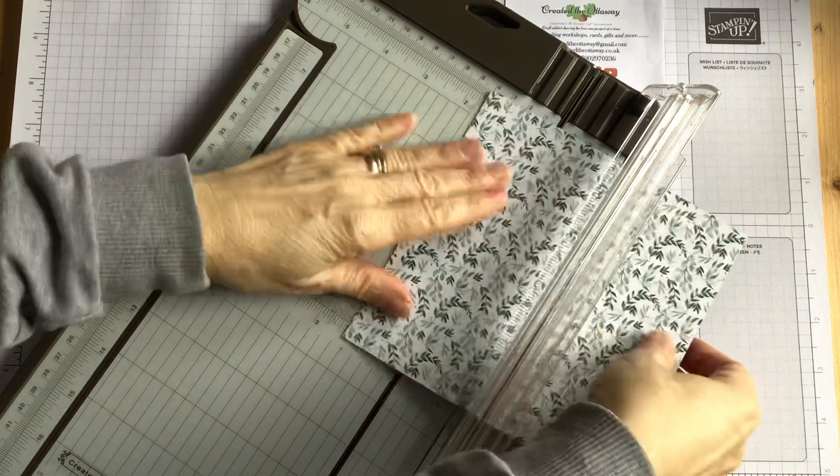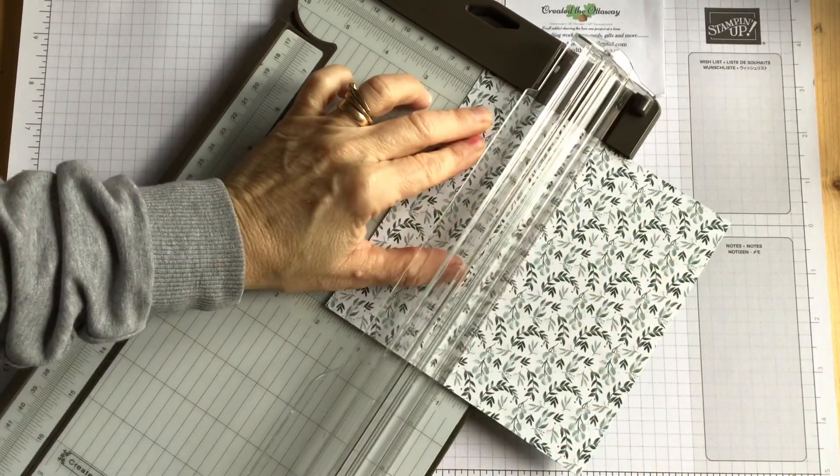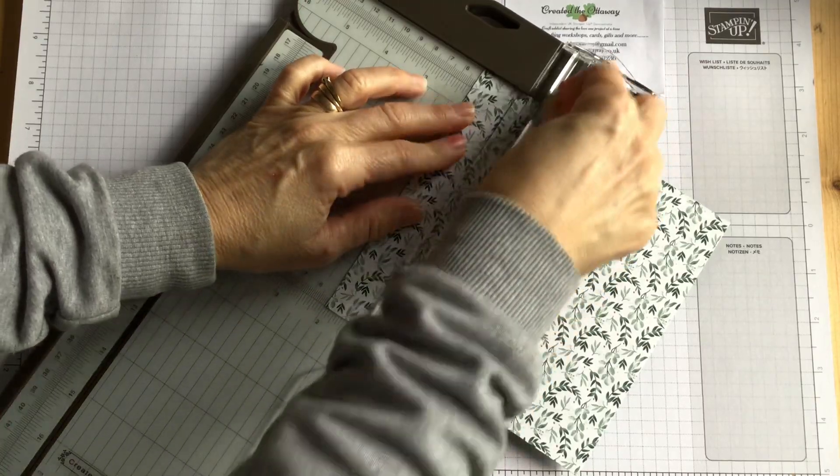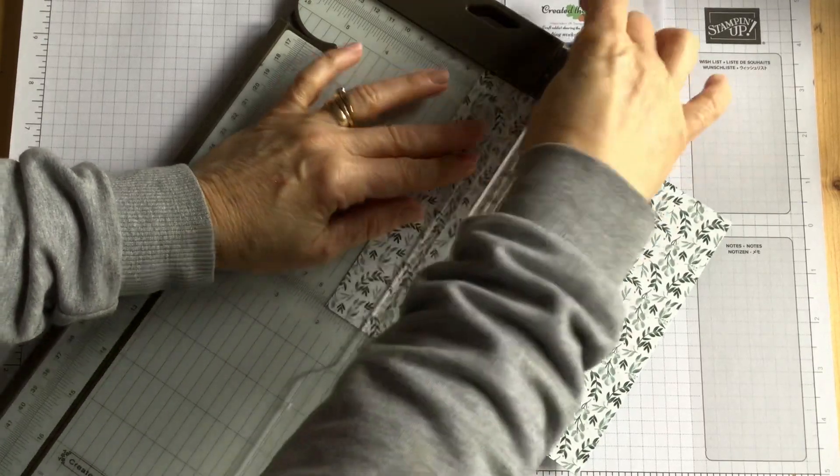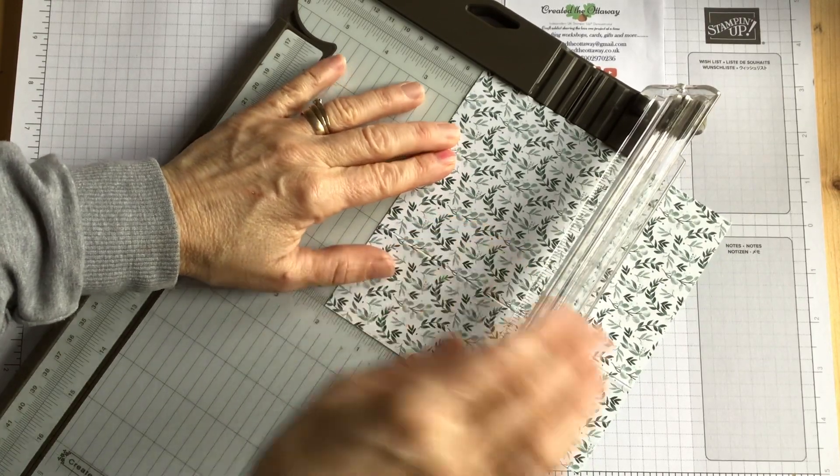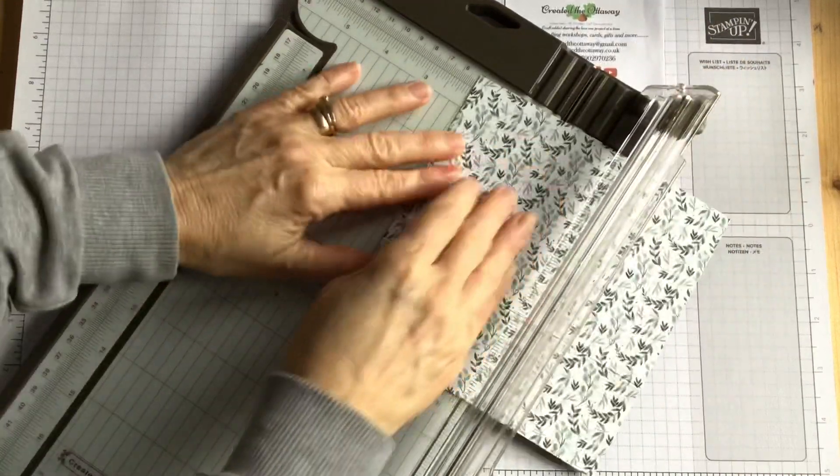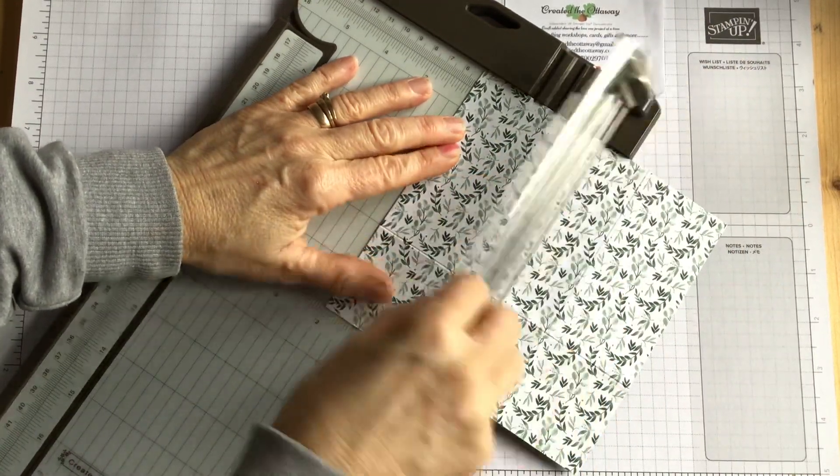So you are going to score on all four sides at 2 inches. So really simple to do, just turn your square round each time and score at 2 inches, and you'll see it comes together really nicely.